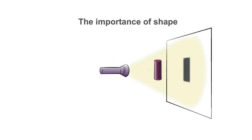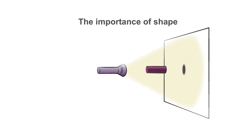We take a solid cylinder and stand it upright. If we shine a light beam on the cylinder so that the beam direction is perpendicular to the cylinder, the shape of the shadow is a rectangle. If the cylinder is positioned parallel to the x-ray beam, the shadow produced is a circle.